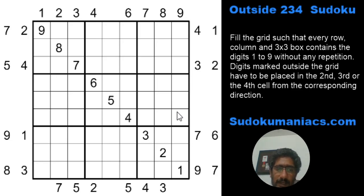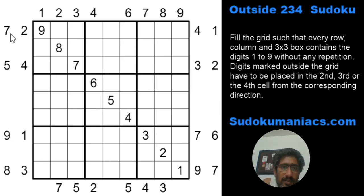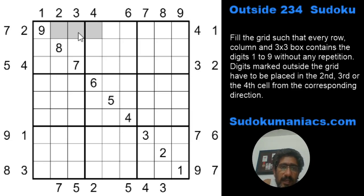The rules state that no digit can repeat in any row, column, or 3x3 box, just like classic Sudoku. Additionally, there are digits given outside the grid — these digits should be placed only in the second, third, or fourth cell from that specific direction. So when I look at a clue like 7 and 2, those can only be placed in the 2nd, 3rd, or 4th cell in that direction.